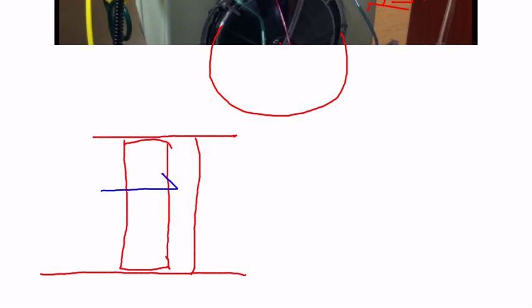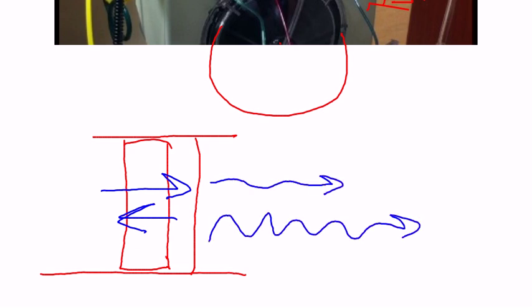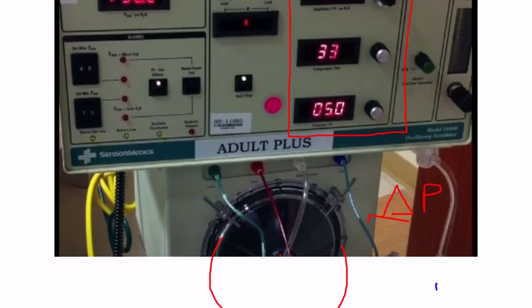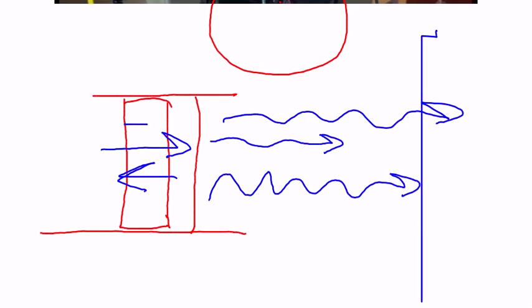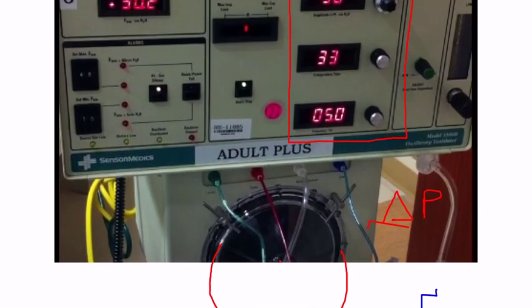The piston oscillates back and forth very quickly, and on the other side of that rubber seal, I have the air that is oscillating going into the patient. What that delta P does is it basically changes how much displacement I have — if I have very low delta P, the little piston is not going to move very much. At a very high delta P, the piston is going to move more, so I'll be able to move more bulk amounts of air by changing the delta P. So that's my power.